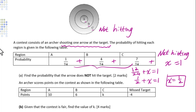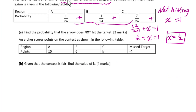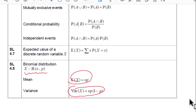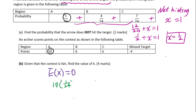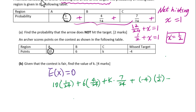This means the probability of not hitting the target is 50%. An archer scores points in the contest as shown in the following table. Given that the contest is fair, contest is fair means expected value equals zero. The expected value of a discrete random variable x uses this formula: 10 times 1 over 24 plus 6 times 4 over 24 plus k times 7 over 24 plus negative 4 times 1 over 2 equals 0.